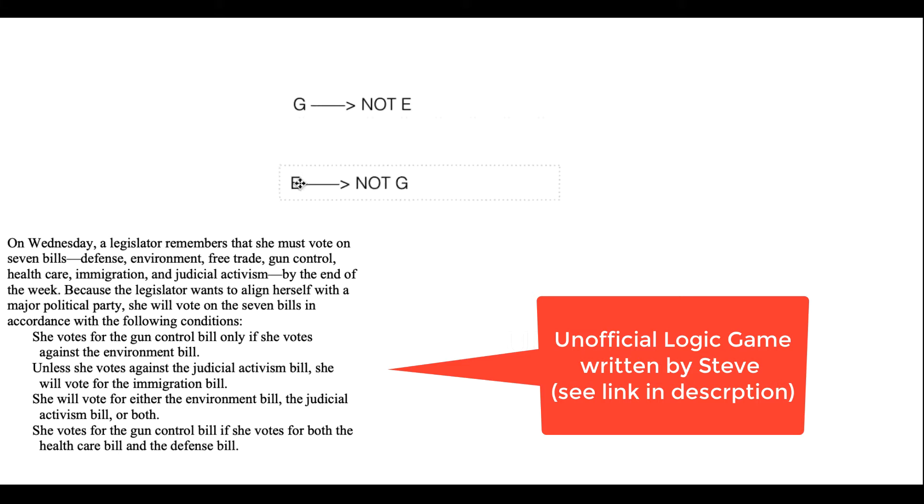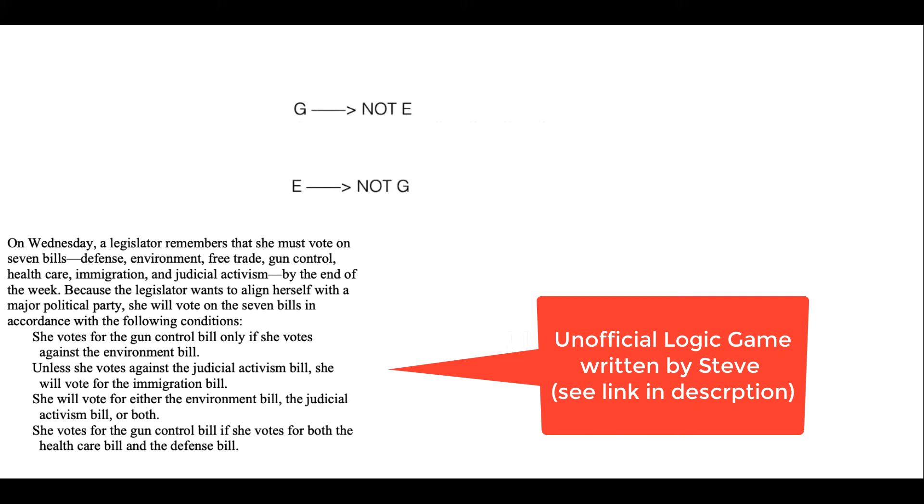Now the next rule, what was our translation of that? So that was if J, yeah, then I. Perfect. Now the thing is, so J then I is good. I'll put that on the side. I'm not going to actually add it in yet because we're not able to neatly link it into what we already have. And on test day, I would just skip this rule and come back to it once we could more easily link it off.